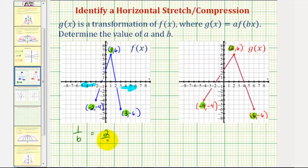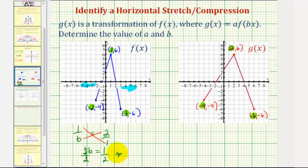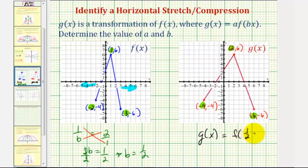Let's go ahead and show that. Put this over 1 and cross multiply. 2 times b is 2b, must equal 1 times 1. So 2b equals 1; divide both sides by 2 — b equals 1 half. Which means g of x is equal to f of 1 half x, since a is 1 because we do not have a vertical stretch or compression. So a is equal to 1 and b is equal to 1 half.